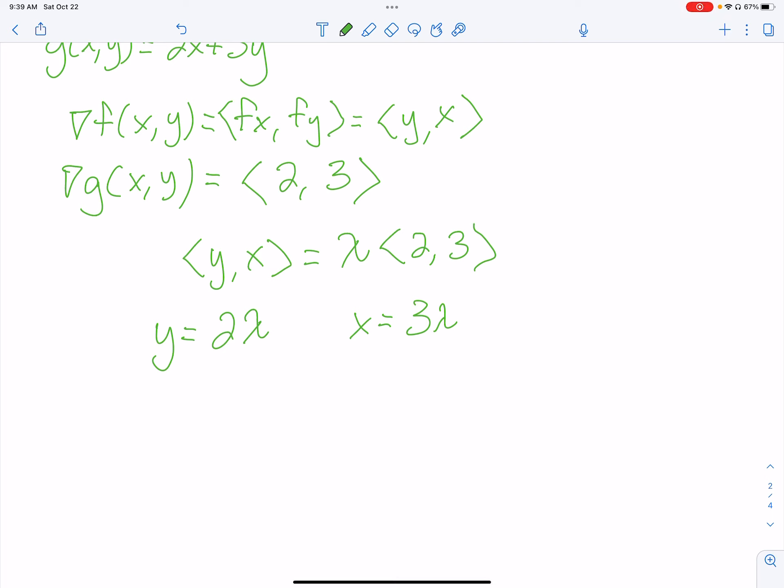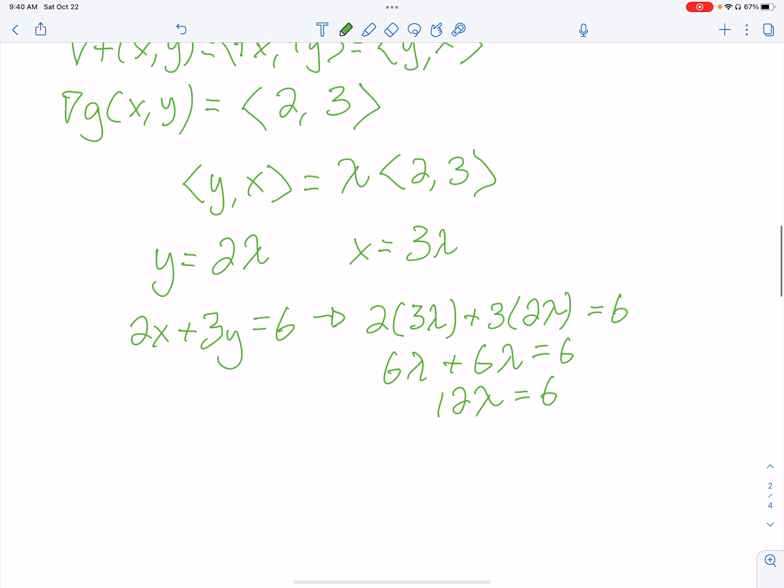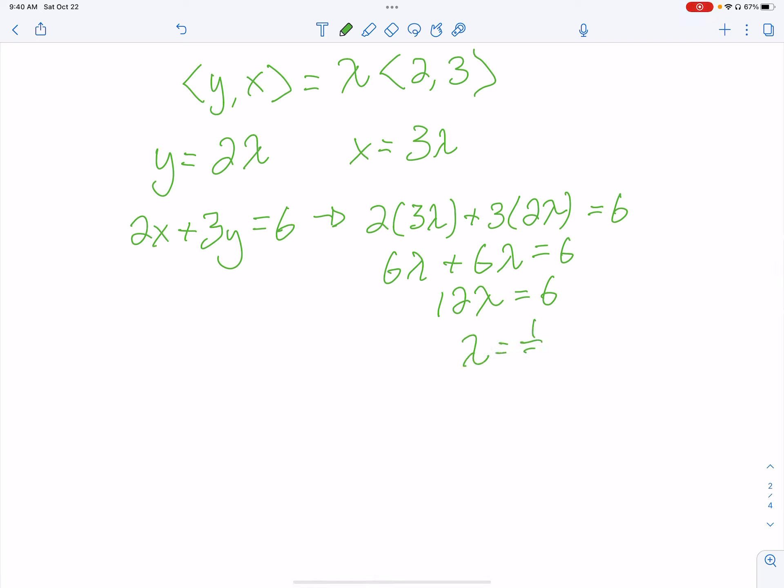Well, at this point, you do anything that you have to do to solve for lambda. Well, I have an equation they gave me. They gave me that 2x plus 3y equals 6. This will be the simplest way to solve for lambda. So, I'm just going to plug everything in. I got 2 times 3 lambda plus 3 times 2 lambda, and that equals 6. Alright, that is 6 lambda plus 6 lambda equals 6, which means we get 12 lambda equals 6, and then that means lambda is equal to 1 half.